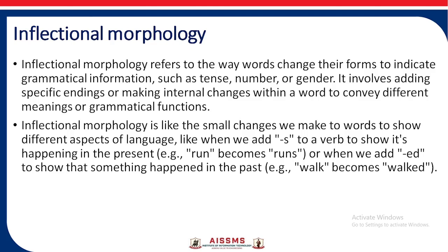Inflectional morphology refers to the way words change their forms to indicate grammatical information such as tense, number, and gender. It involves adding specific endings or making internal changes within a word to convey different meanings or grammatical functions. For example, when we add 's' to 'run' it becomes 'runs', showing the present state. When we add 'ed', it shows past tense — like 'walk' becomes 'walked'.